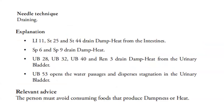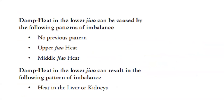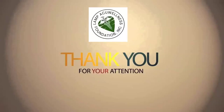The person must avoid consuming foods that produce dampness or heat. Damp heat in the lower jiao can be caused by upper jiao heat and middle jiao heat patterns of imbalance. Damp heat in the lower jiao can result in heat in the liver or kidneys.